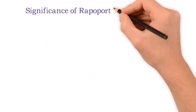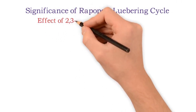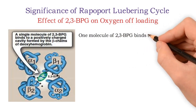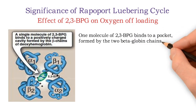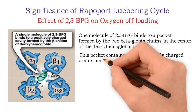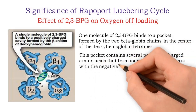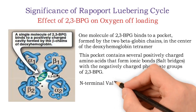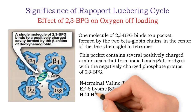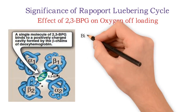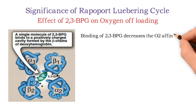The main significance of the Rapoport-Luebring cycle is the effect of 2,3-BPG on oxygen offloading. One molecule of 2,3-BPG binds to a pocket formed by the two beta-globin chains in the center of the deoxyhemoglobin tetramer. This pocket contains several positively charged amino acids that form ionic bonds — salt bridges — with the negatively charged phosphate groups of 2,3-BPG. Three amino acid residues of each beta chain are involved: valine at position 1, lysine at position 82, and histidine at position 143. Remember these three amino acids as they can be asked in MCQs.